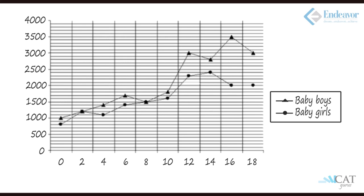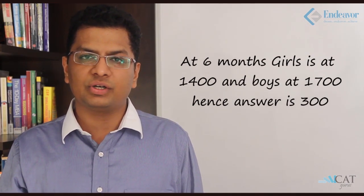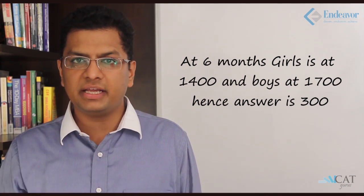At six months, the circle for girls is just below 1500, so it is 1400. For boys at six months, the triangle is two lines above 1500, so it is 1700. The difference is 300 calories, so 300 is the right answer — option A.